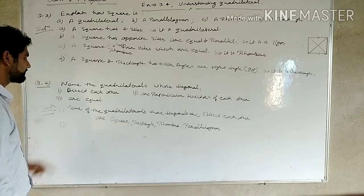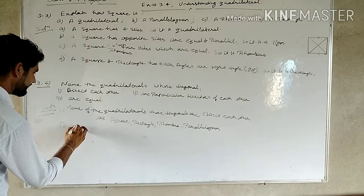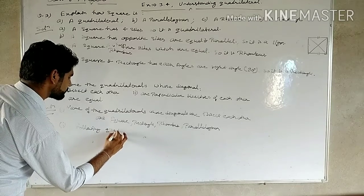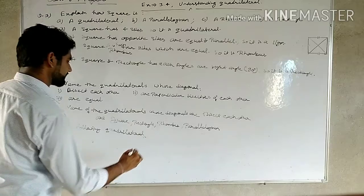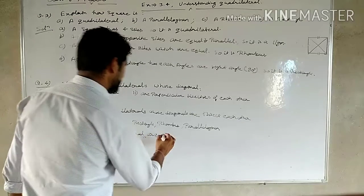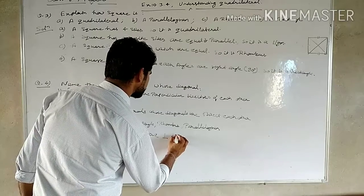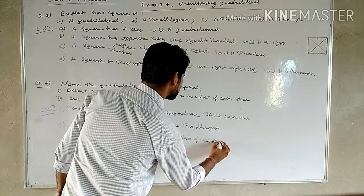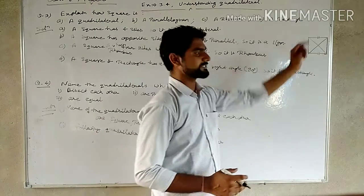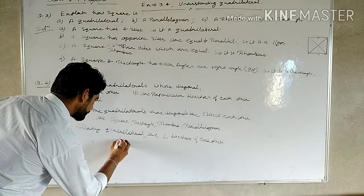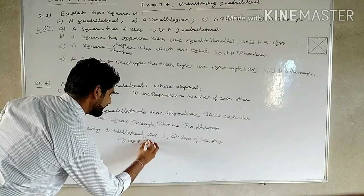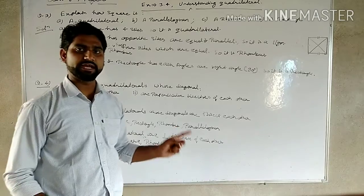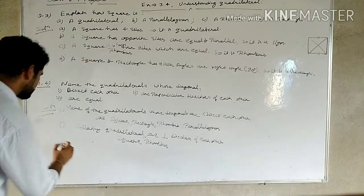Second part: name the quadrilaterals whose diagonals are perpendicular bisectors of each other. If the diagonals cut each other at 90 degrees, they are perpendicular bisectors. The answer is a square and a rhombus — their diagonals are perpendicular bisectors of each other.